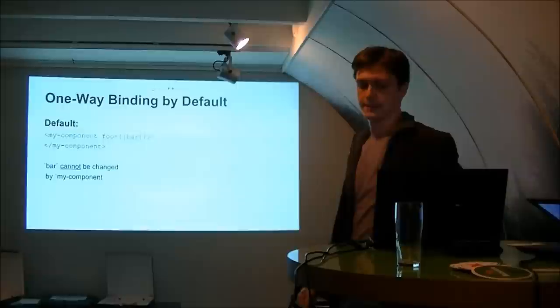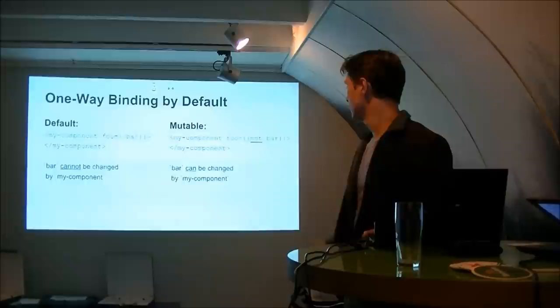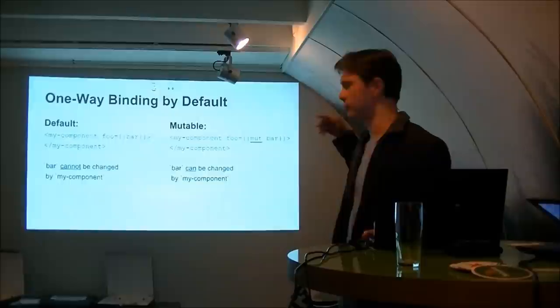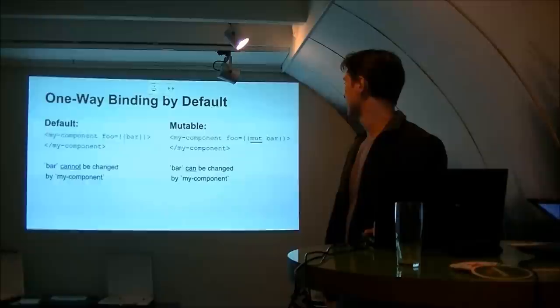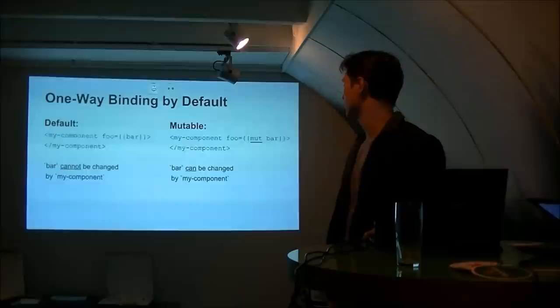If you really want to have two-way bindings, you can allow it by putting the mute, which makes mutable, which means mutable. So that it could be done two ways. It could be changed both ways.